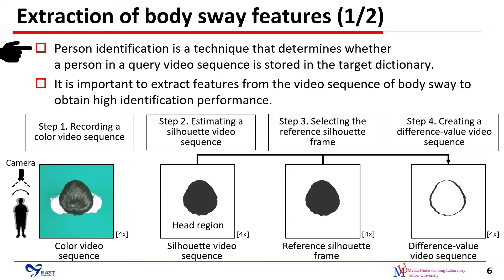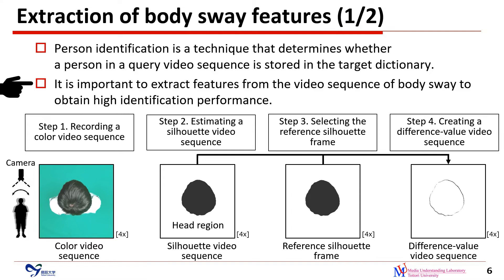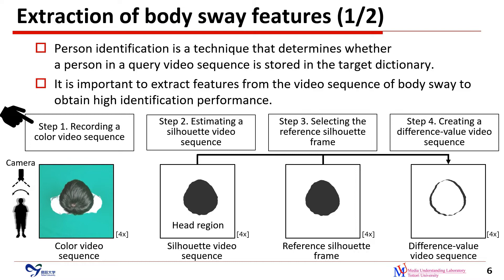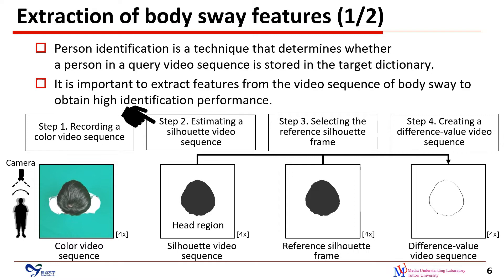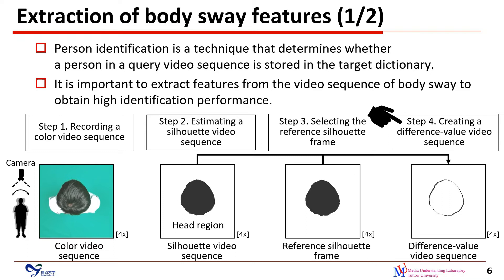Person identification is a technique determining whether a person in a query video sequence is stored in the target dictionary. It is important to extract features from the video sequence or body sway to obtain high identification performance. In step 1, we record a color video sequence of body sway using an overhead camera. In step 2, we estimate a silhouette video sequence of the head region from the color video sequence. In step 3, we select the reference silhouette plane for each silhouette video sequence. In step 4, we create a difference-value video sequence to extract the movement of the head region at each time step.